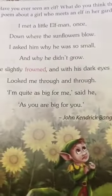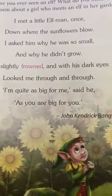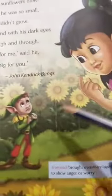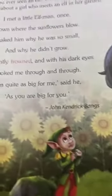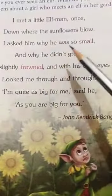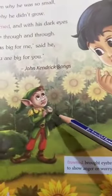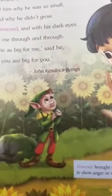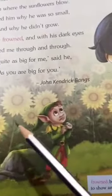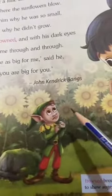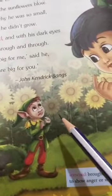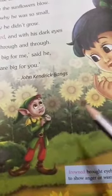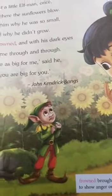I met a little elf man once — mein ek baar ek elf man se mili thi. Down where the sunflowers blow — kahaan pe mili thi bacho ye little girl elf man se? Woha per jahan per bohut saare sunflowers khile hue hain, aur woh sunflowers hawa ke saath blow kar rahi hain, yane ki jhoom rahi hain.